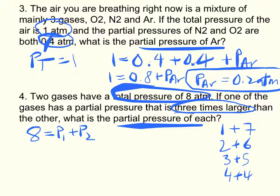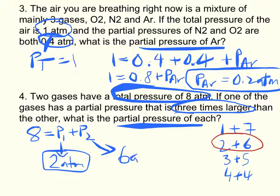One of these has to have the partial pressure three times larger than the other one. The only one that has that true is 2 plus 6. So each of these add up to 8. So the partial pressure of gas 1 is 2 atm and for gas 2 is 6 atm. It doesn't matter which one we call gas 1 or 2, but you know the two partial pressures for those gases.